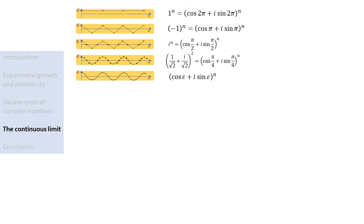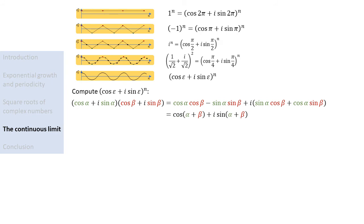To find the formula for this continuous oscillation, let's find an explicit formula for raising this number to the power n. We can observe that if we have two complex numbers defined by the angles alpha and beta, their product will yield a new complex number defined by the angle alpha plus beta. Therefore, raising the complex number defined by an angle epsilon to the power n yields a complex number defined by the angle n times epsilon.